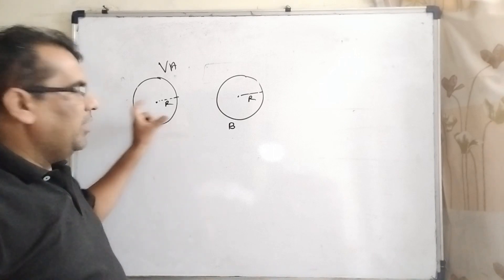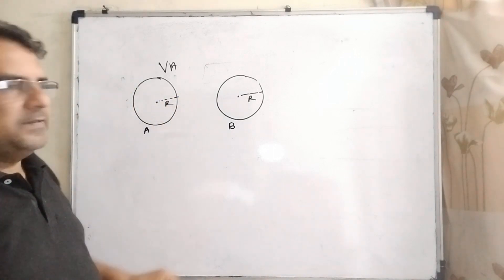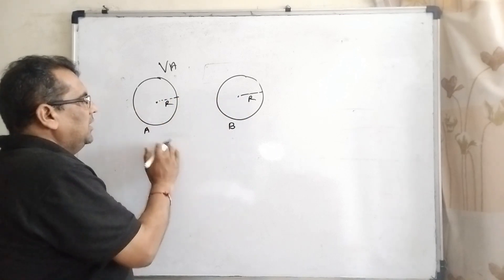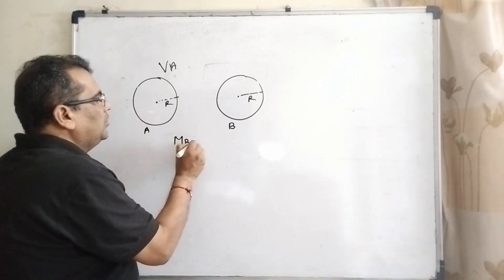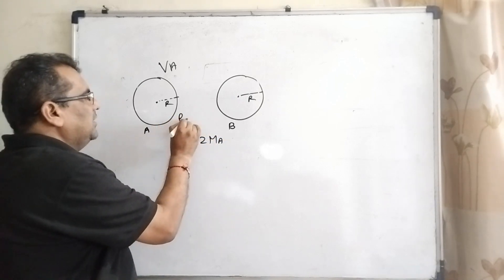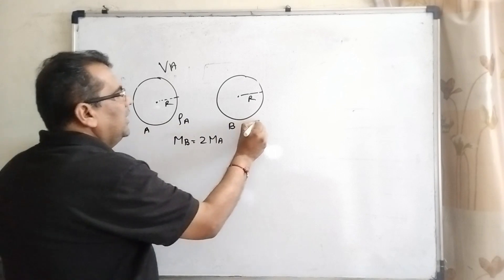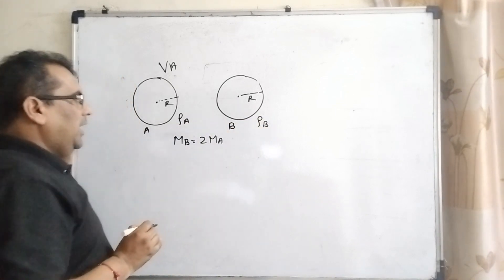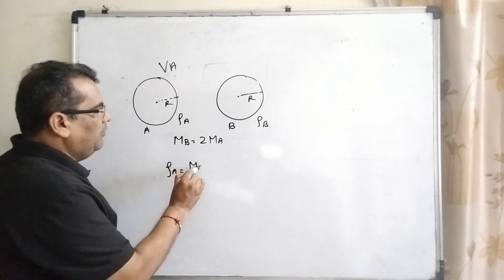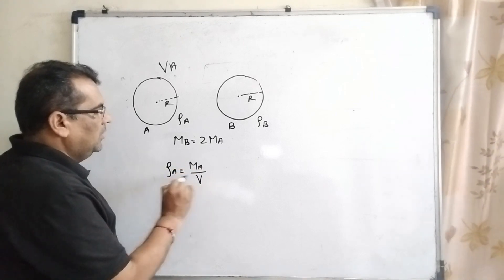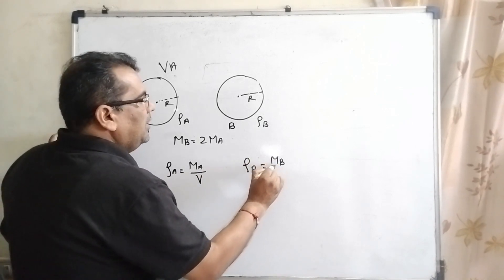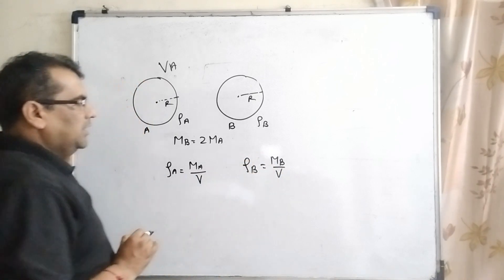Before solving this question, understand what it says. Here you have two stars with the same radius and the relation between masses is Mb equals twice of Ma. Density of A is ρA, density of B is ρB. As you know, density equals mass upon volume. ρA equals Ma upon V and ρB equals Mb upon V.